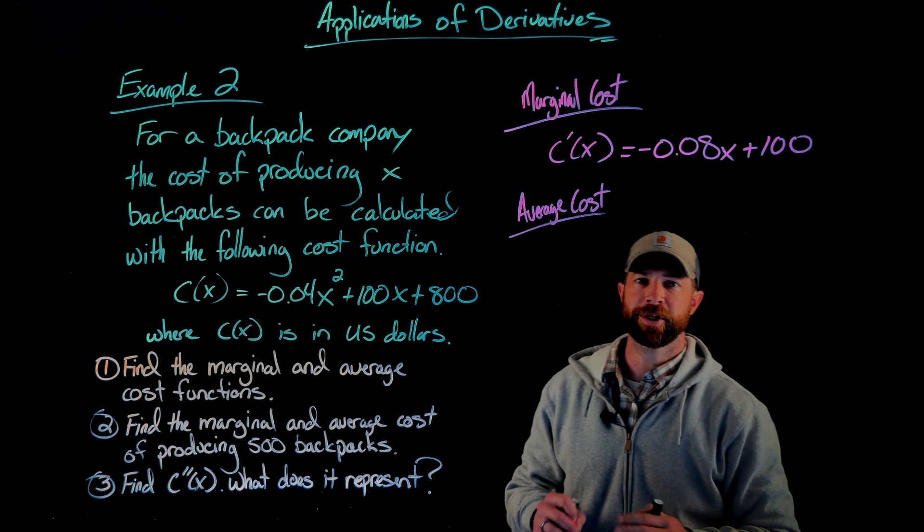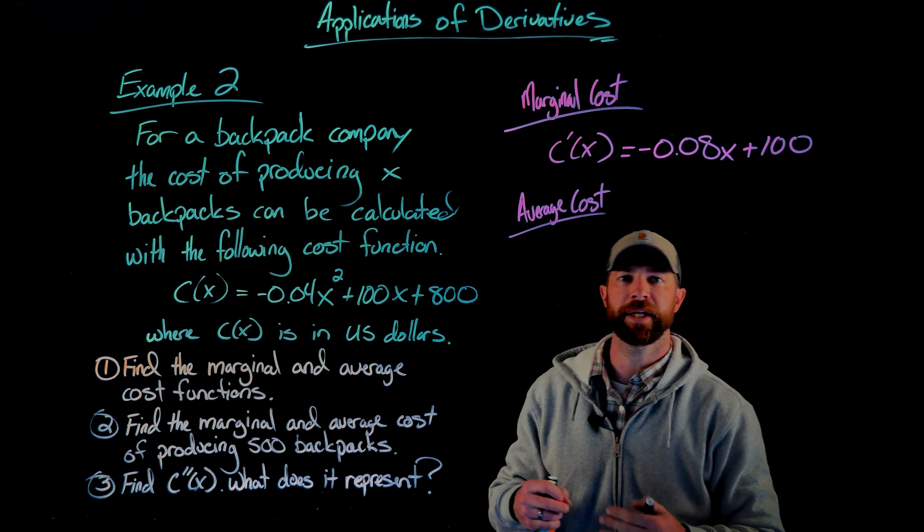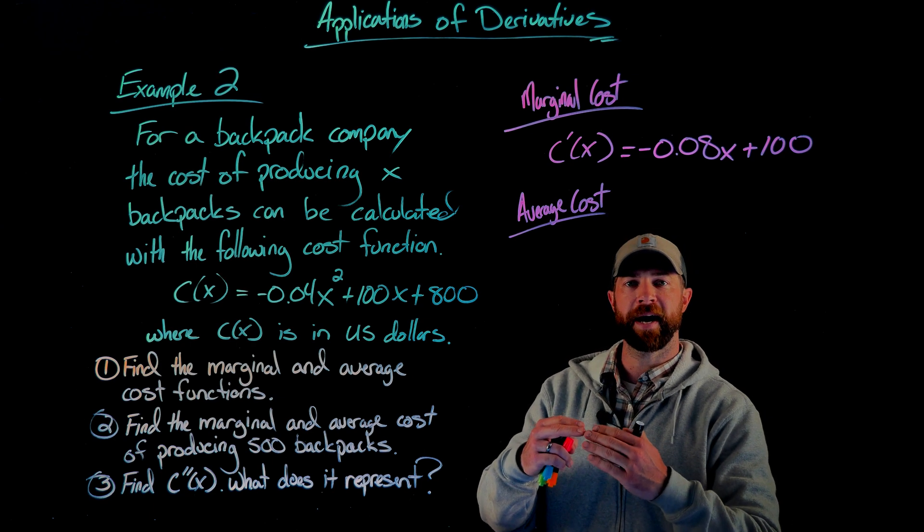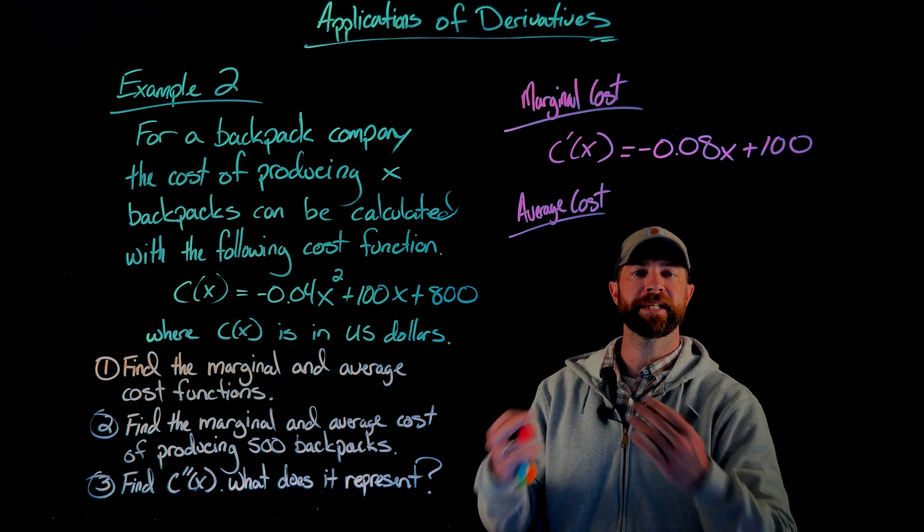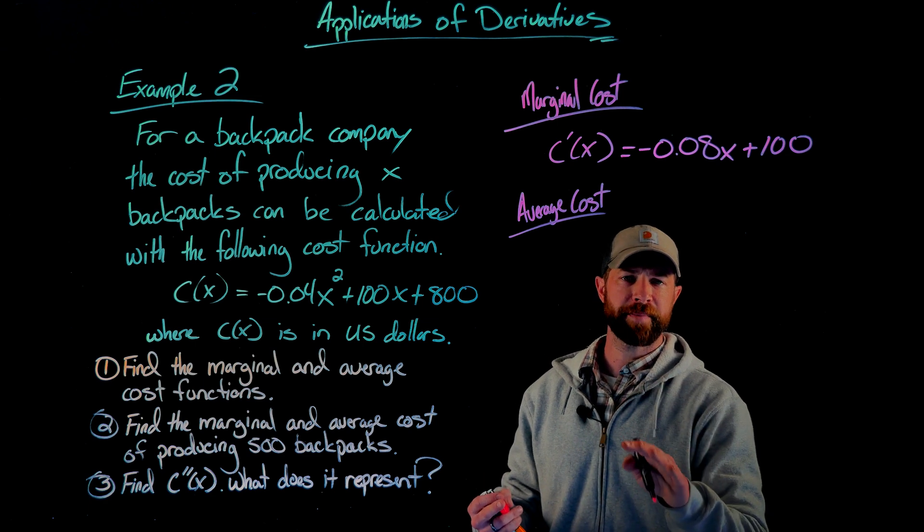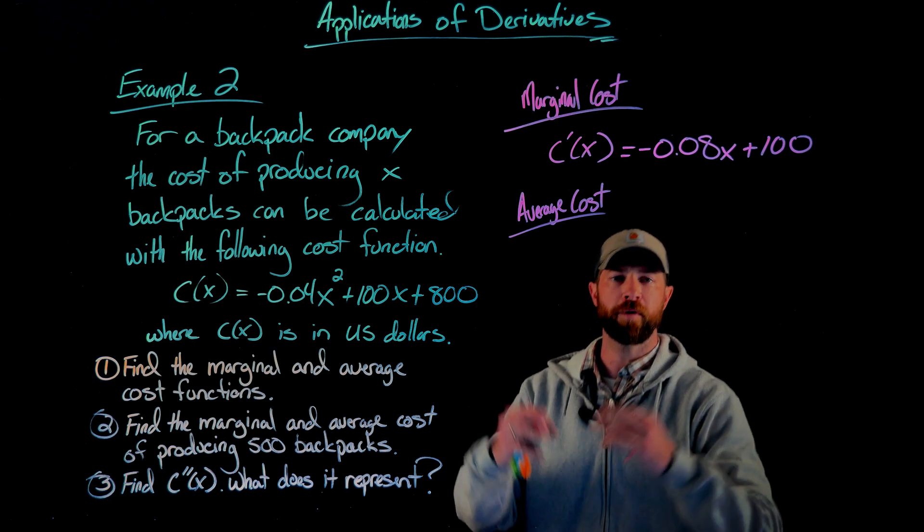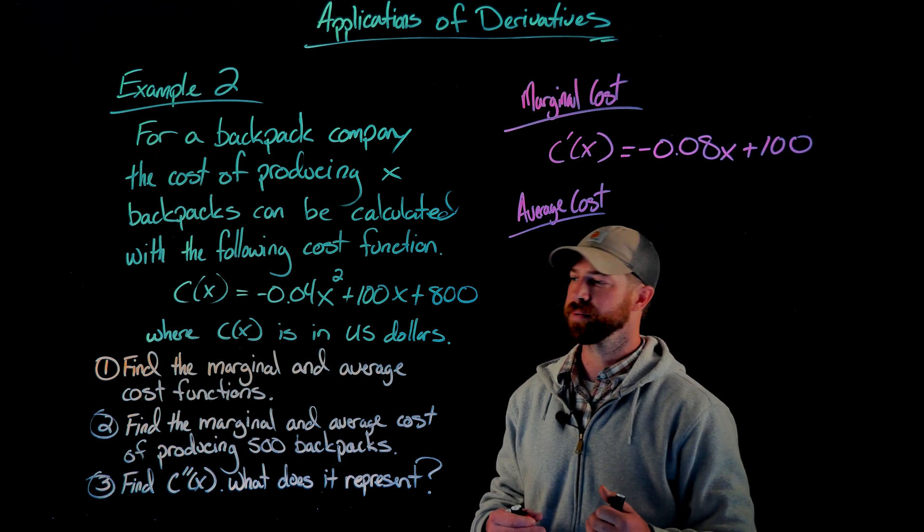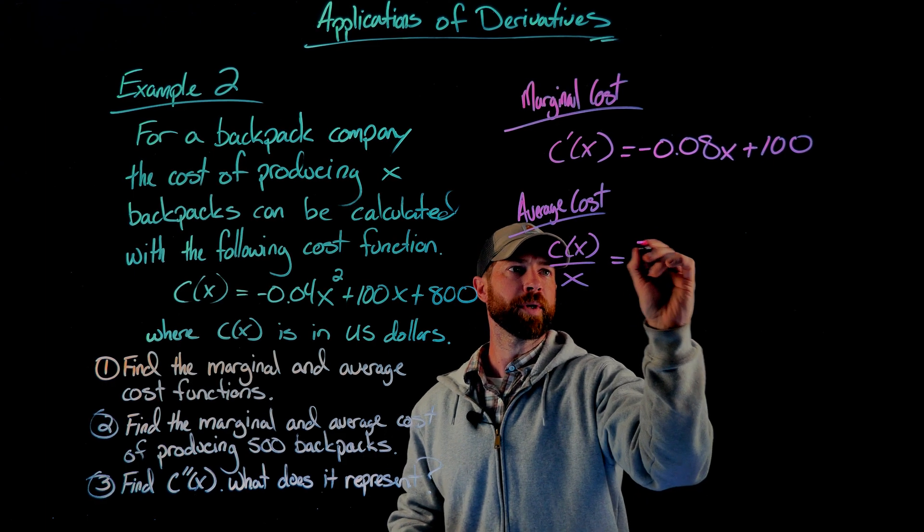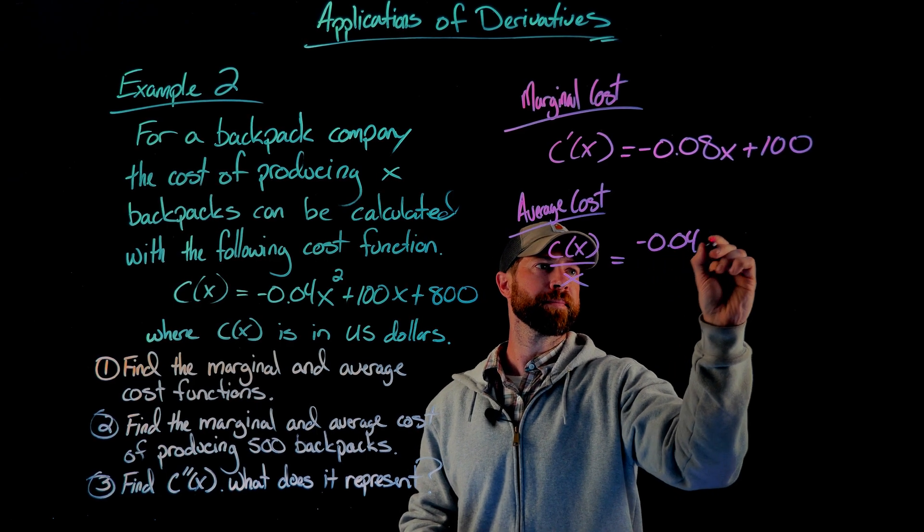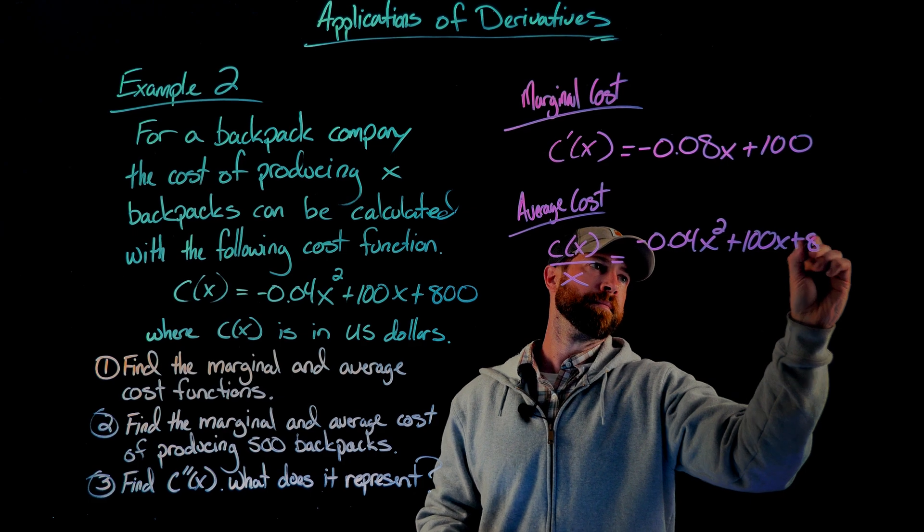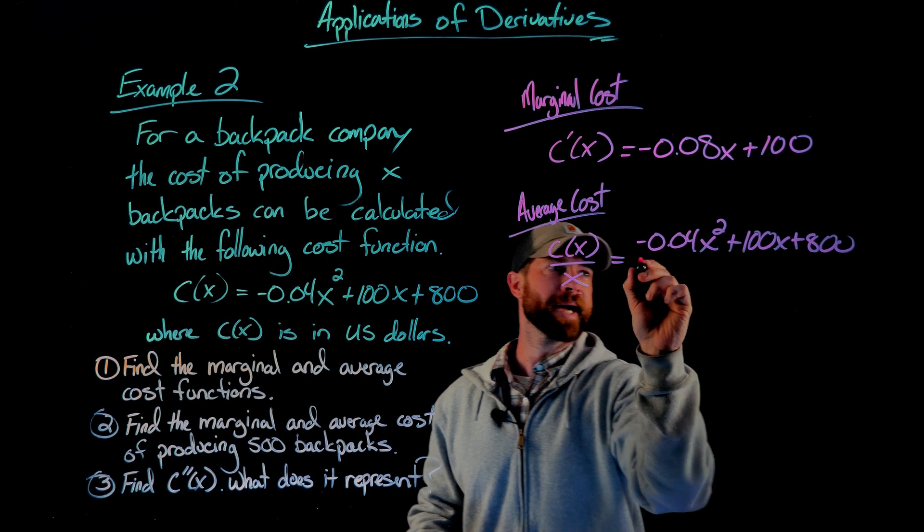The average cost function actually hasn't had anything to do specifically with calculus. The average cost function for any function like this is found by taking the original function and simply dividing it by x. That should make sense, right? That's how we find the average of anything. We find the overall amount and then divide by how many of those we've created or produced. So in this case, we just take our original cost function and divide it by x.